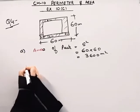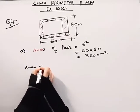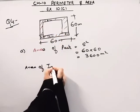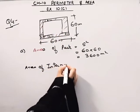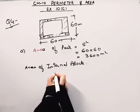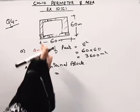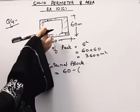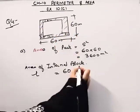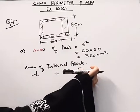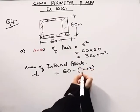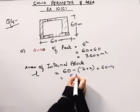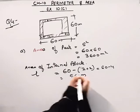Now we will find out the area of what you can call the internal block. The internal block — what will its length be? Length will be 60 minus 2 meters here and 2 meters here, so 2 plus 2. That is 60 minus 4, which is equal to 56 meters.